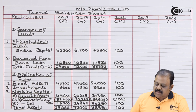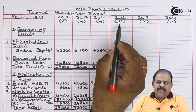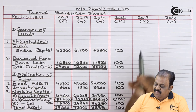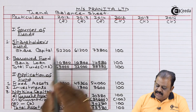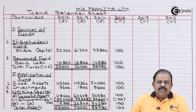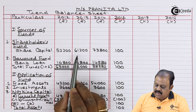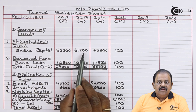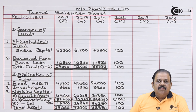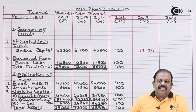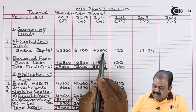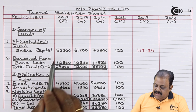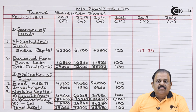Now finding percentages for 2013 and 2014. Share capital for 2013: 61,200 divided by 52,200 multiplied by 100. Share capital for 2014: 73,800 divided by 52,200 multiplied by 100 equals 141.38 percent.